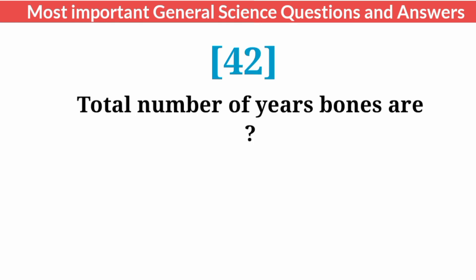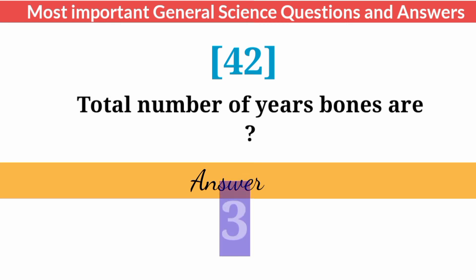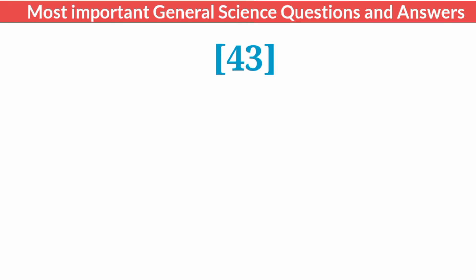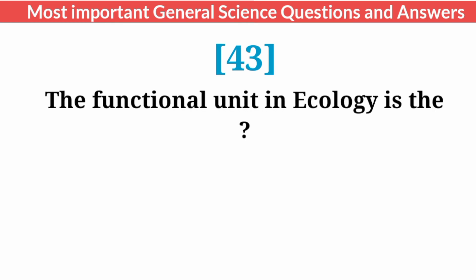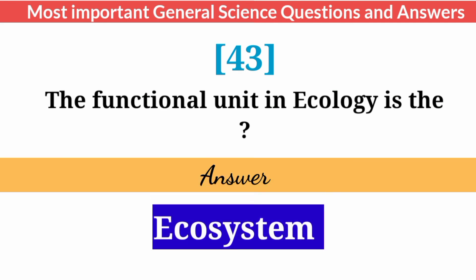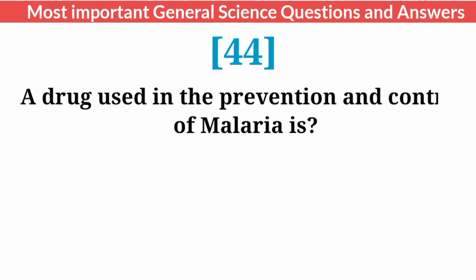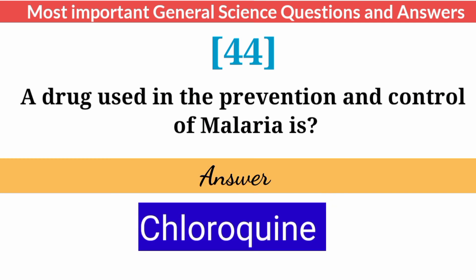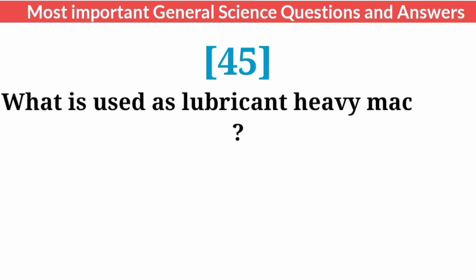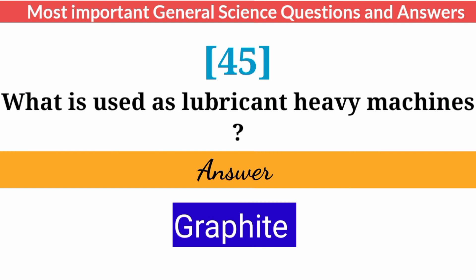The total number of bones in the human body? Answer: 206. The functional unit in ecology is the? Answer: Ecosystem. A drug used in the prevention and control of malaria is? Answer: Chloroquine.